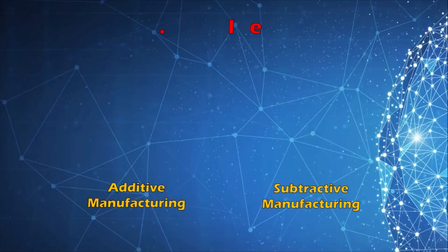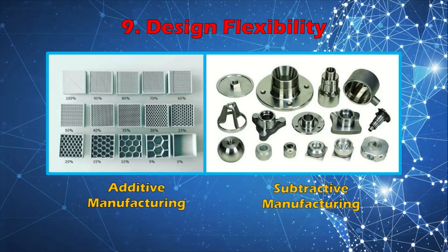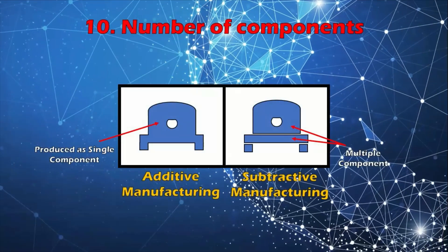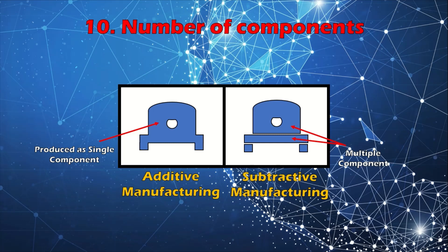Number nine: design flexibility. In additive manufacturing, the weight of components can be reduced by changing the design and making hollow cavities inside the component, which makes it strong and lightweight. This is not possible in subtractive manufacturing. Number ten: number of components. In additive manufacturing, the product can be designed so that a greater number of components are printed together, reducing the need for combining components with nuts and bolts. This is possible because of the layer-by-layer approach.